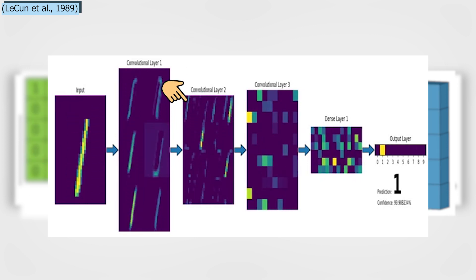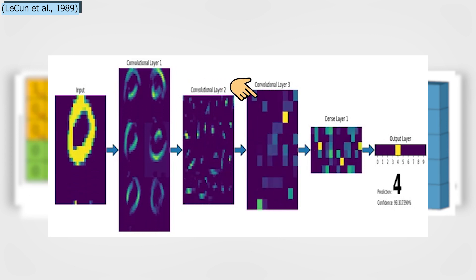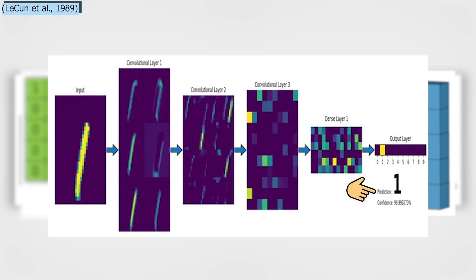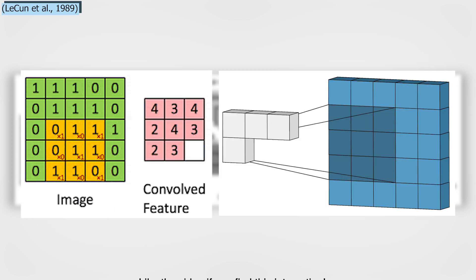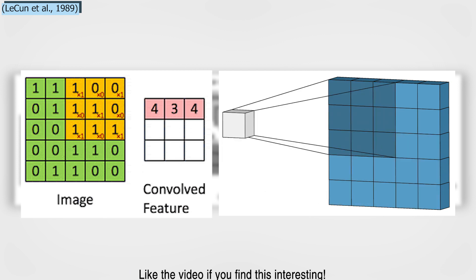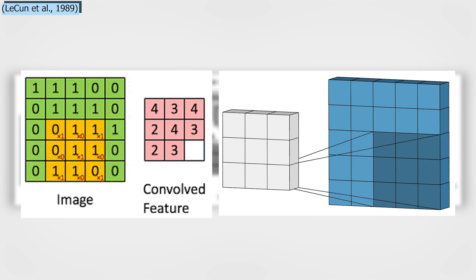The network will autonomously learn filter values that detect important features to match the output we want to have, such as the object's name in a specific image sent as input for a classification task. These filters are usually of size 3x3 or 5x5 pixel squares, allowing them to detect the direction of the edges, left, right, up, or down.